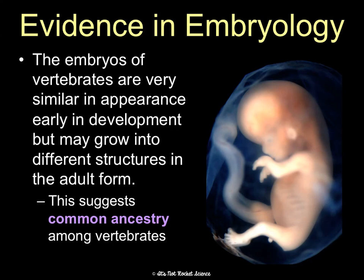If you have the physical PowerPoint, there's a really cool link in the notes section — you could also probably Google it; it's on PBS. It gives you four different embryos and you have to guess which organism they belong to. It's pretty challenging to guess them, and it really demonstrates how these similarities are evidence of common ancestry.